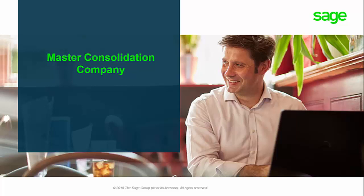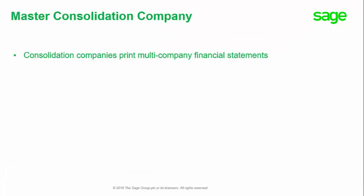This video is on how to set up a master consolidation company in your Sage BusinessWorks. Consolidation companies let you print multi-company financial statements while still maintaining separate accounting records for each of your businesses. A master consolidation company is used for multi-company financial statements and should not be used for any purpose other than consolidating your subsidiary companies.